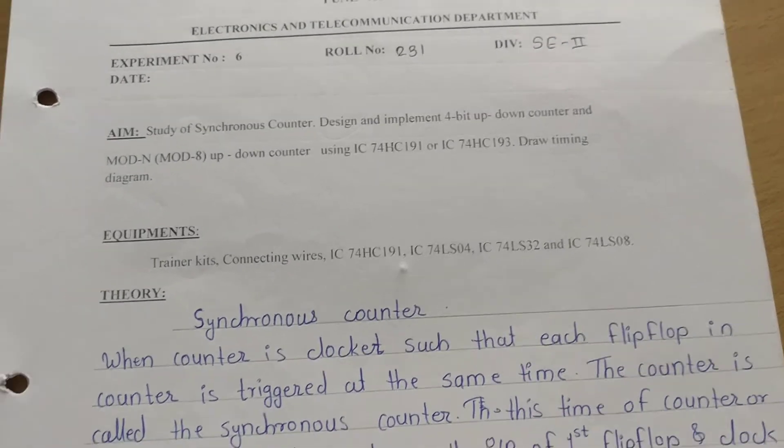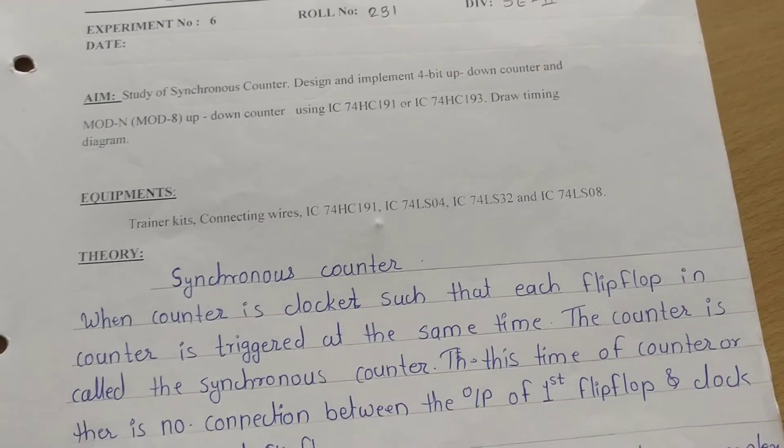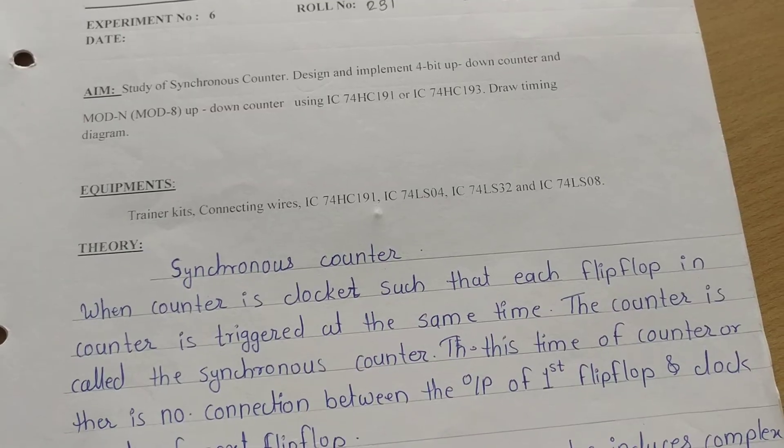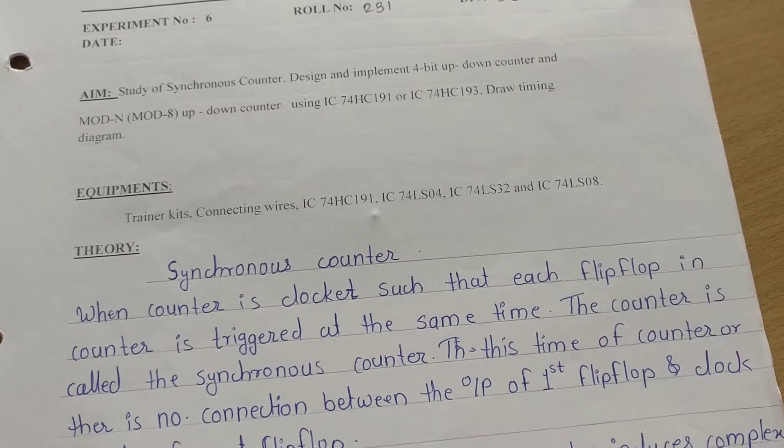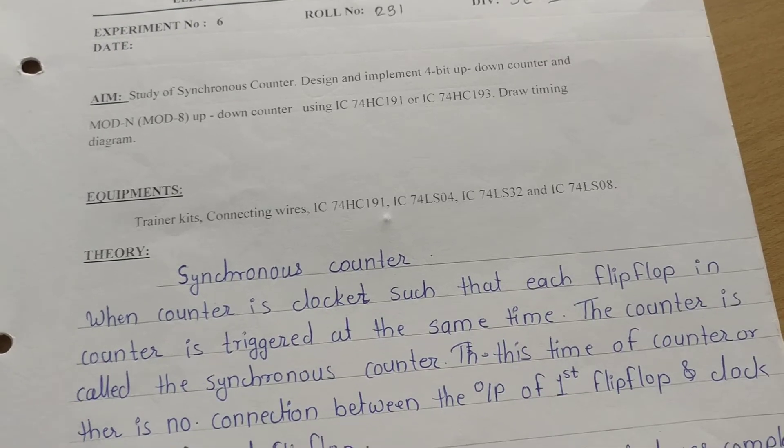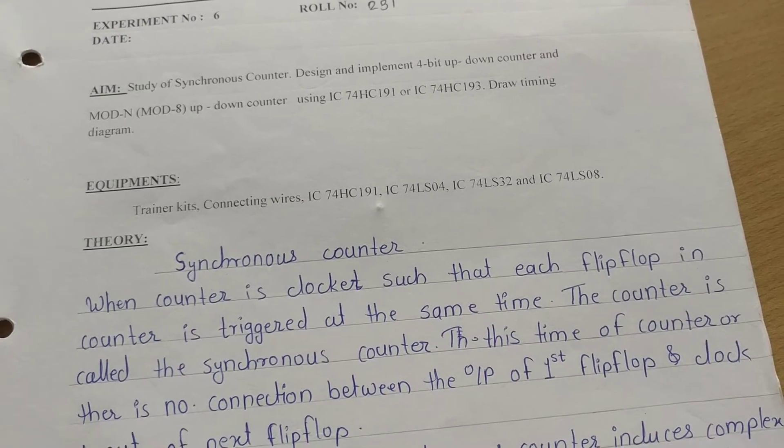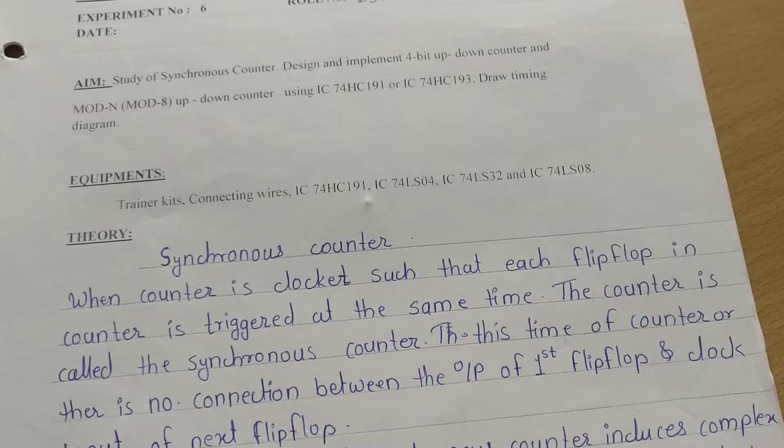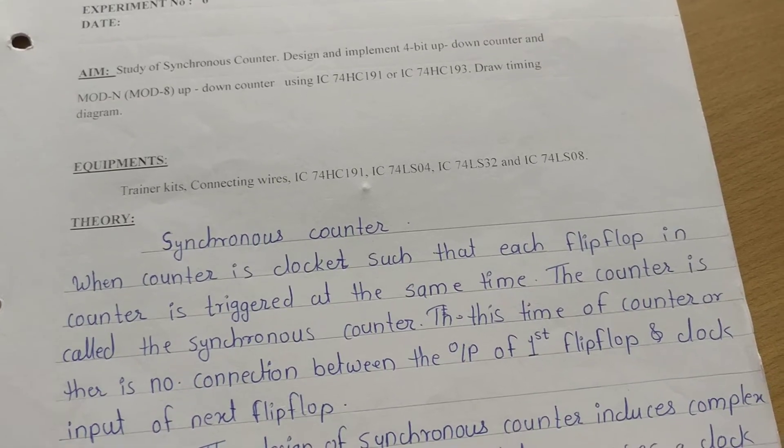Now we are going to perform the next experiment, which is the study of synchronous counter. Design and implement a 4-bit up-down counter and mod N, that is mod 8 up-down counter, using IC 74HC191 or 74HC193, and draw the timing diagram.